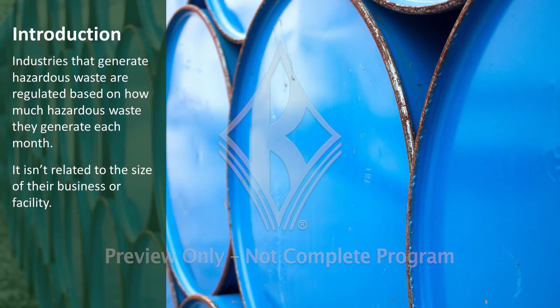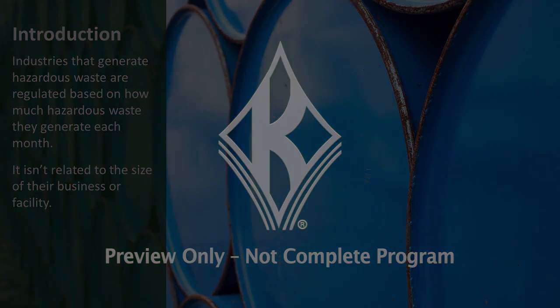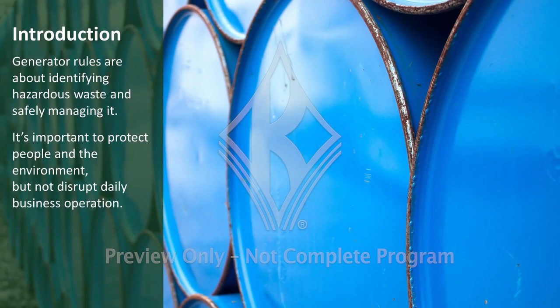Many industries generate hazardous waste. Generators of hazardous waste are regulated based on the amount of hazardous waste they create in a calendar month — not based on the size of their business or facility. Generators must follow the rules to correctly identify waste and manage it safely. The rules are in place to protect people and the environment without causing too much disruption to daily business operations.